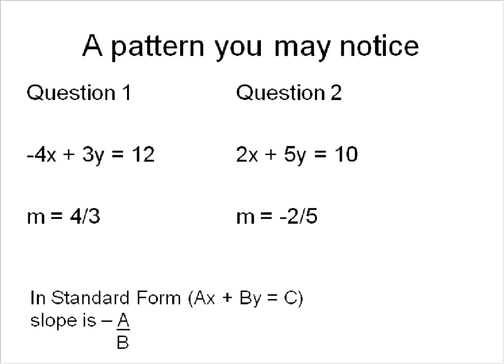Now, there's a pattern you may have noticed. In question number one, our question said negative 4x plus 3y is equal to 12, and the slope, which is often represented by m, is equal to 4 over 3. See these numbers here? 4 and 3. See those numbers there? 4 and 3. Let's look for a pattern here.